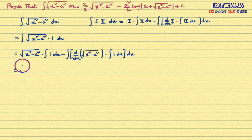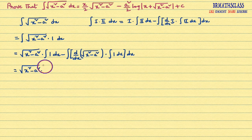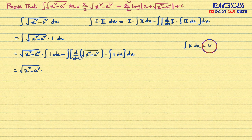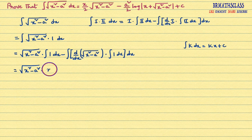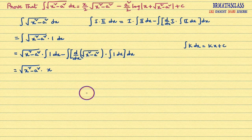That equals root over x square minus a square into integral of 1 dx. We know integral of k dx is kx plus c, so integral of 1 dx is x. We don't write plus c yet — after completion of full integration we will write the integration constant plus c. So integral of 1 dx is x, minus integral of...